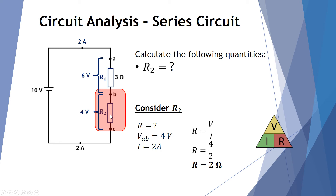Finally we want to calculate the resistance R2 between points B and C. R is our unknown. The voltage between points B and C is 4 volts, and the current we know is 2 amps. So using R equals V over I — 4 volts divided by 2 amps — we end up with a resistance of 2 ohms.